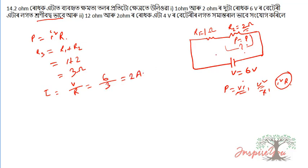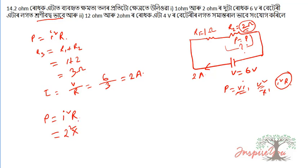I = 6/3 = 2 ampere. Then P = I²R = 2 squared into the resistance, which gives 4 times 2 equals 8 watt.